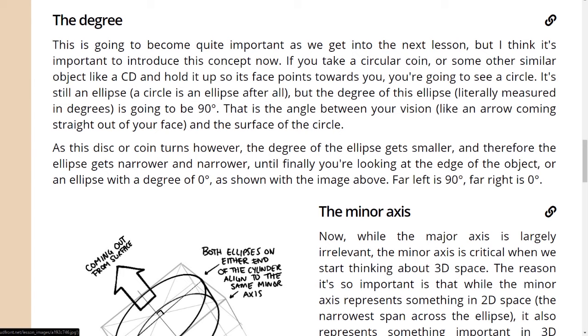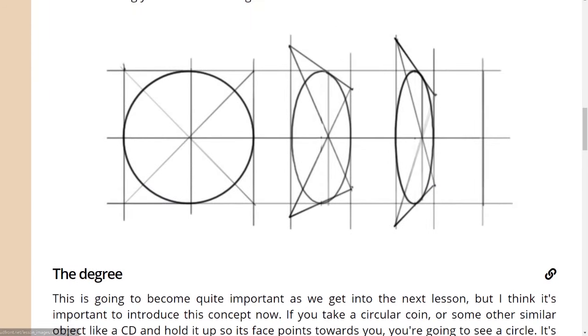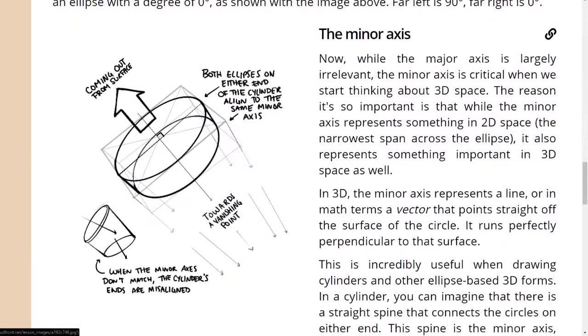As this disk or coin turns, however, the degree of the ellipse gets smaller, and therefore the ellipse gets narrower and narrower, until finally you're looking at the edge of the object, or an ellipse with a degree of zero. As shown with the image above, far left is 90 degrees, far right is zero degrees.